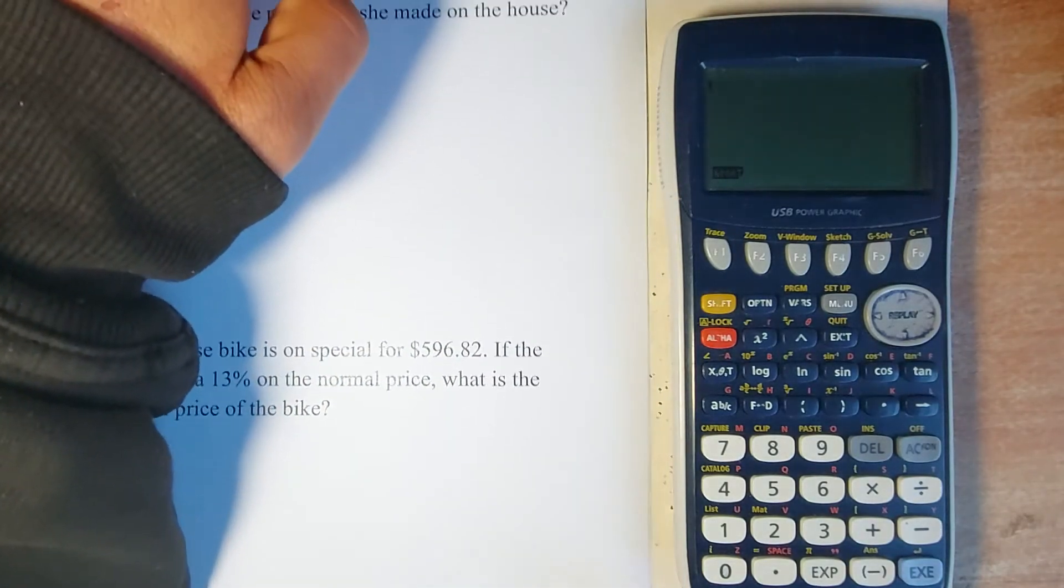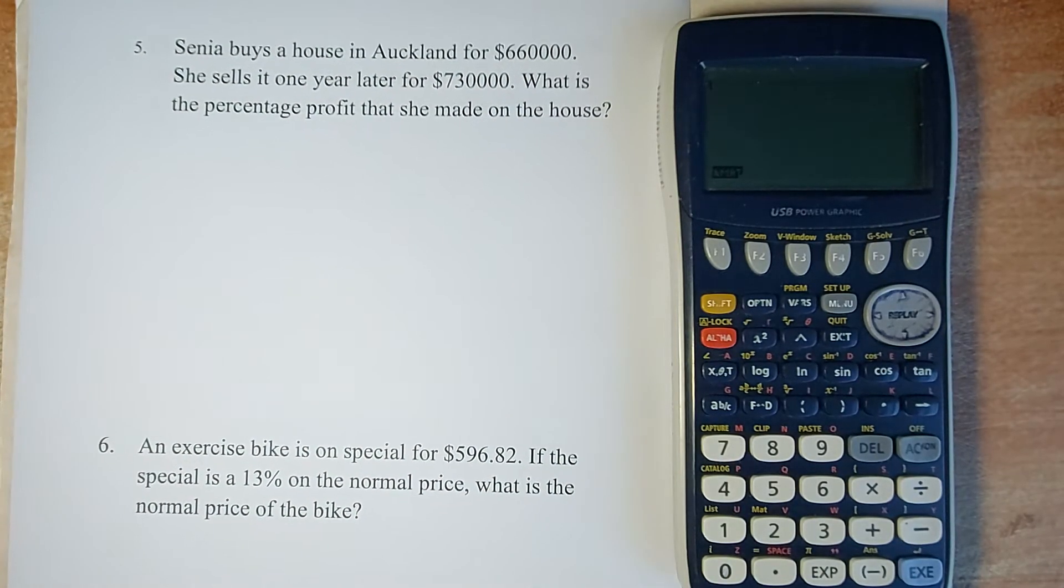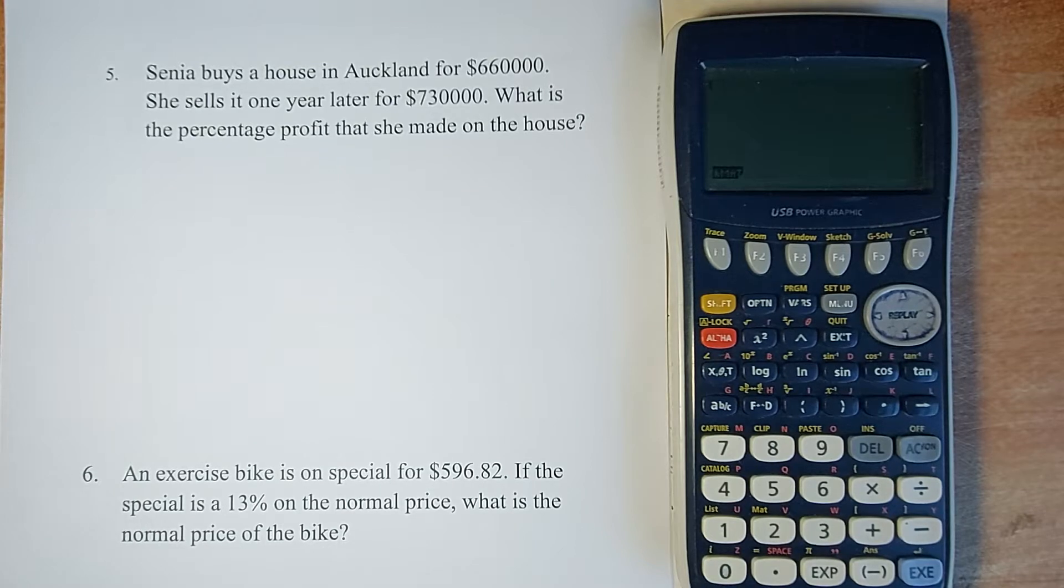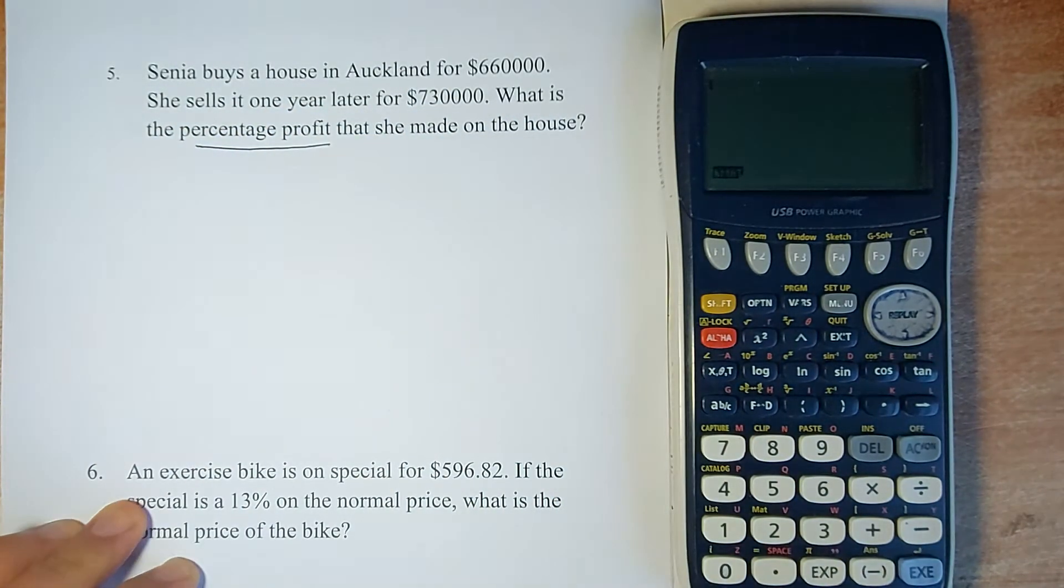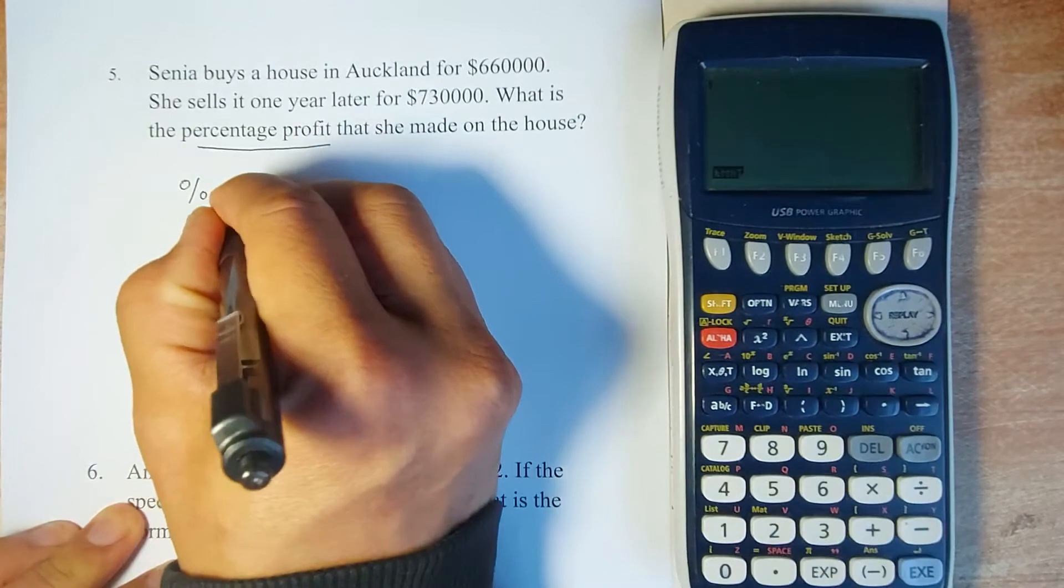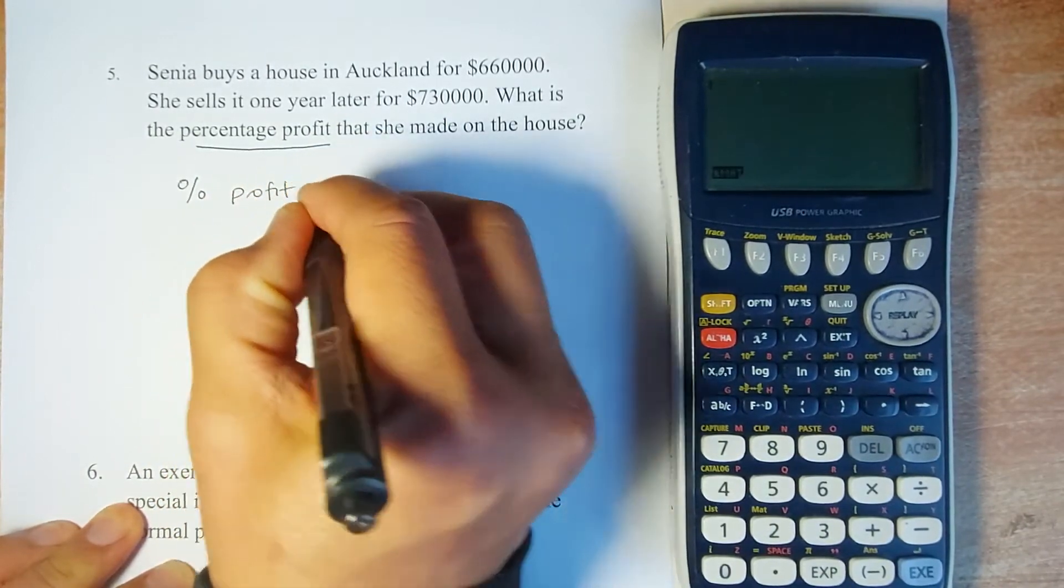Now we'll look at a word problem. Senior buys a house in Auckland for $660,000. She sells it one year later for $730,000. What is the percentage profit she made? Remember, if they ask for percentage profit, loss, gain, or change, the formula is: percentage profit equals change divided by original multiplied by 100.